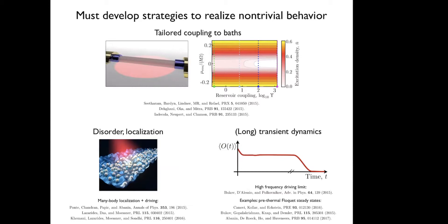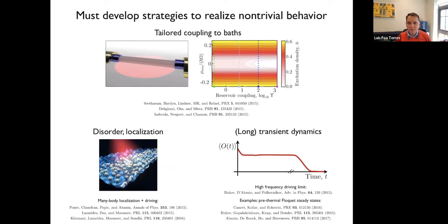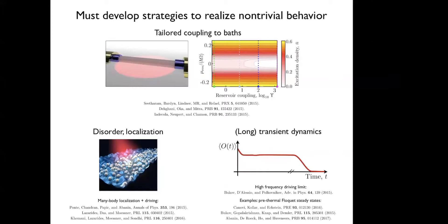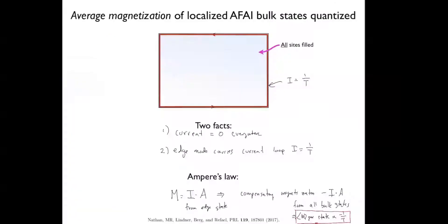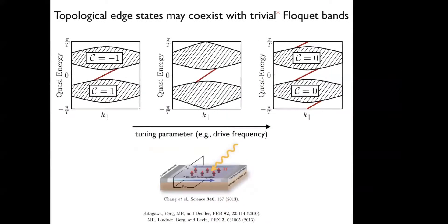Q (Srimayet): If you apply a rotating wave approximation and go to a rotating frame where the model becomes time-independent, can you map the quasi-energies to real energies in that frame and calculate the Chern number for those states? [Answer cut off in transcript — question was still being posed at end of recording.]